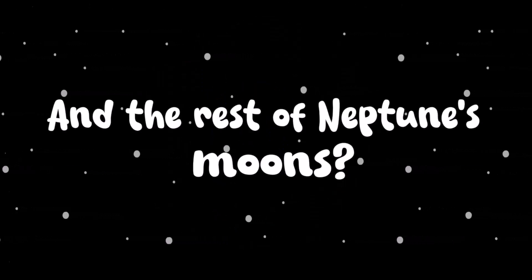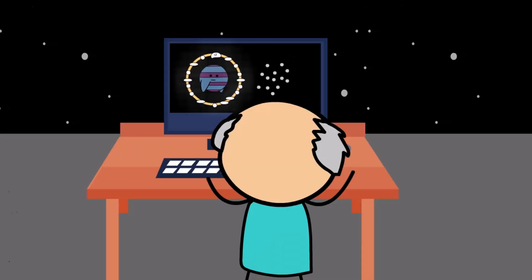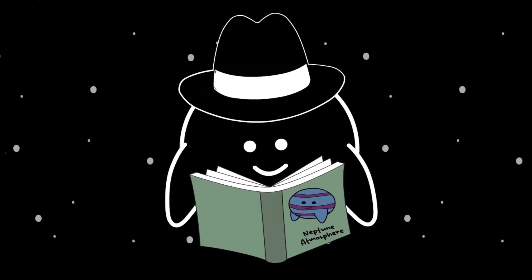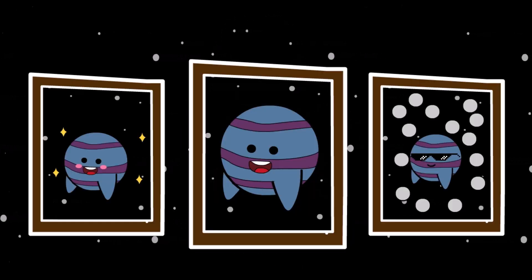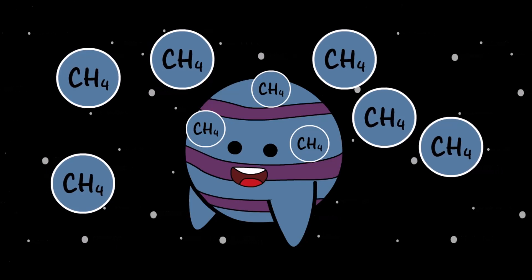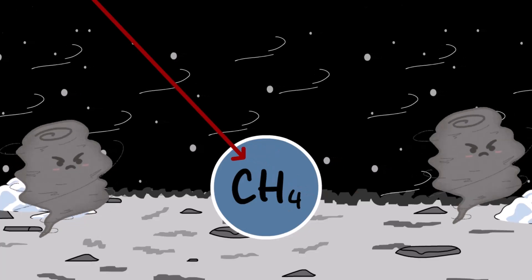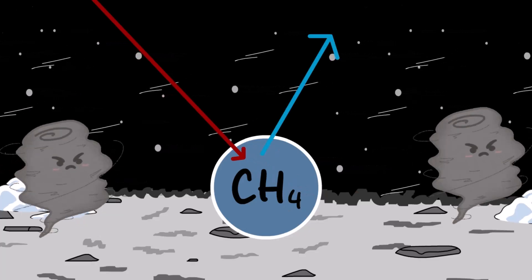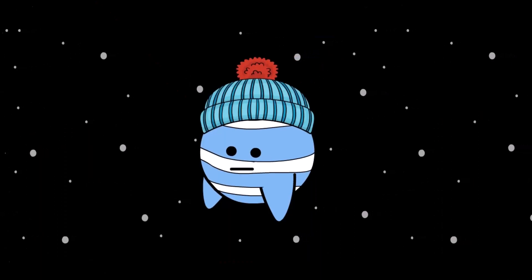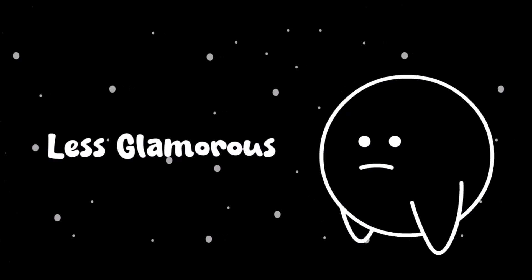And the rest of Neptune's moons? They don't even get a speaking role in this drama. They're small, quiet, and just kind of tag along. That's not the only strange thing going on with Neptune. Its atmosphere is like something out of a science fiction novel. That rich blue color you see in pictures? It's mostly thanks to methane gas. On Neptune, methane absorbs red light and reflects blue, which is why the planet looks like a frozen sapphire in space. Sounds pretty, but the reality is a little less glamorous.